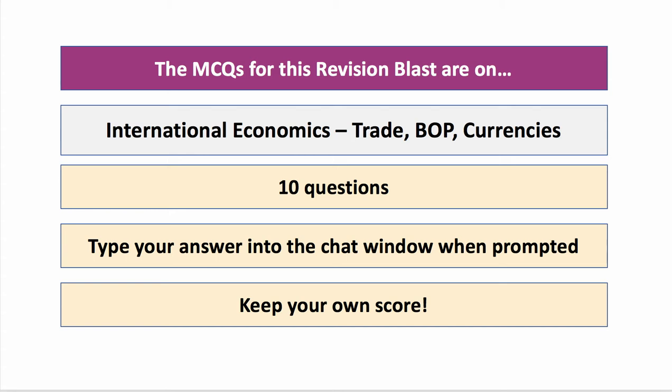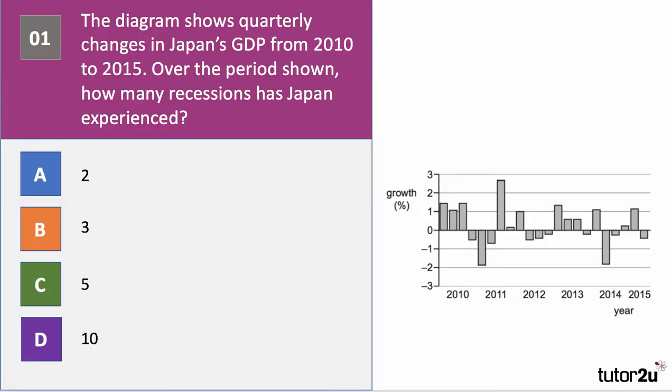Here we go — question number one. The diagram on the right-hand side shows quarterly changes in Japan's GDP from 2010 through to 2015. Over the period shown, how many recessions has Japan experienced? Press the pause button, have a go at the answer, and then come back when you're ready.